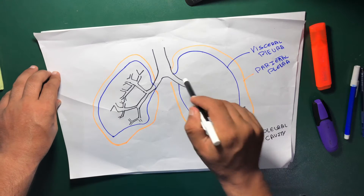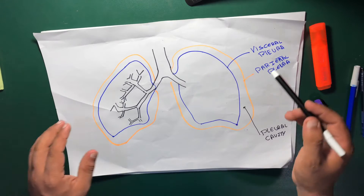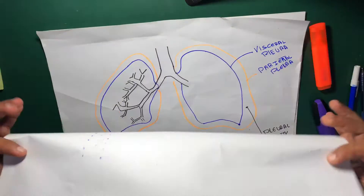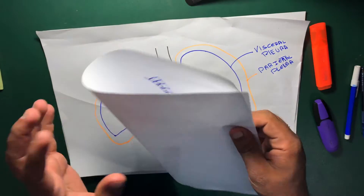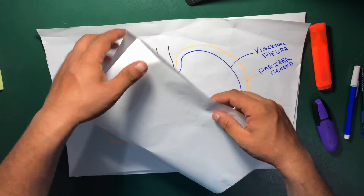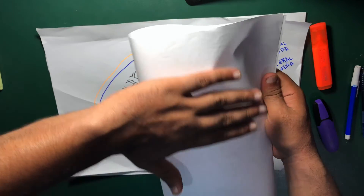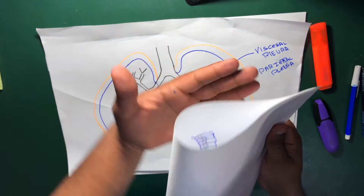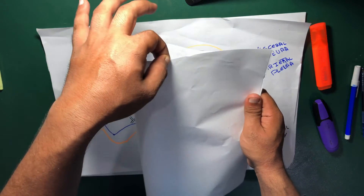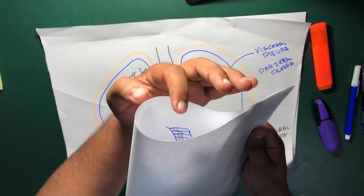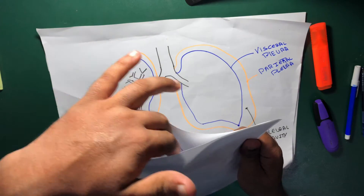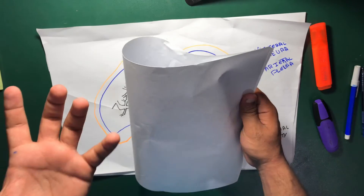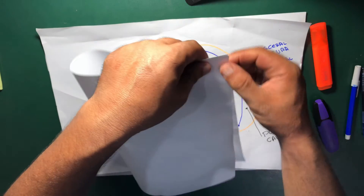Let's discuss how the pleural cavity is formed. The pleura is actually one layer — there are not two layers. To demonstrate it, consider this paper as one layer, but as it folds down it becomes two layers. Consider my hand as the thorax: above is the thorax with parietal pleura, and below on the other side covering the lungs is the visceral pleura. The space in between is called the pleural cavity. It is actually one layer but folded — it can best be demonstrated by a balloon.